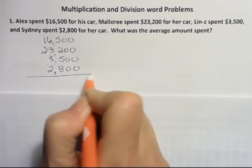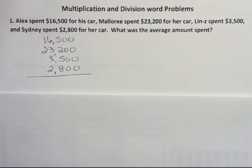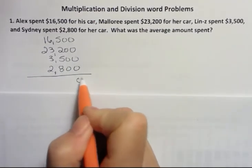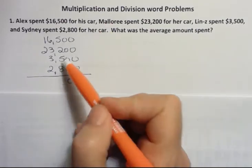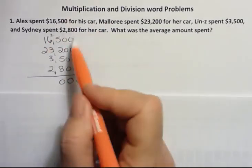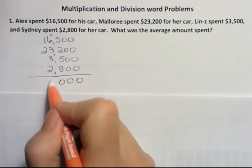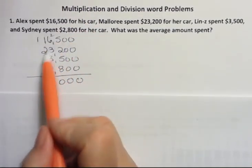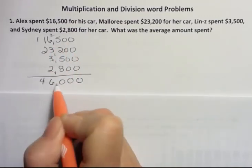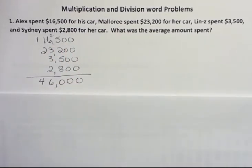I left the dollar symbols off but we are working with dollars here. When I wrote those I lined them up nicely so that I have my ones and my tens and everything lined up. So the sum is $46,000.